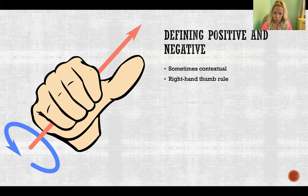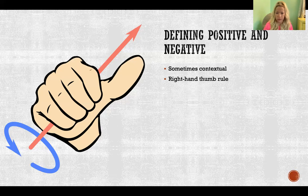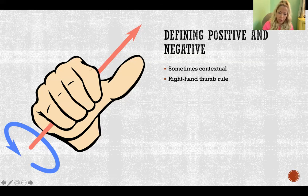So use the right-hand thumb rule to determine whether a joint motion is in the positive or negative direction. Thanks so much for watching — I'll see you for the next video.